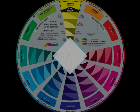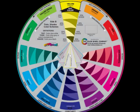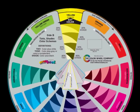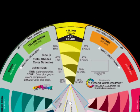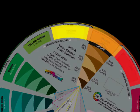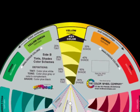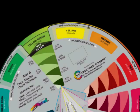Color relationships are represented by geometric shapes in the center of the wheel, except for analogous colors. Analogous colors are colors that are similar to each other. These are shown on either side of the key color arrow, where colors beside each other are similar. These color combinations are very soft and pleasing to the eye.